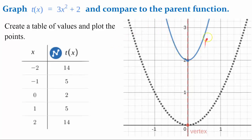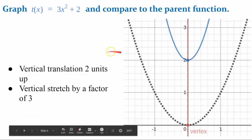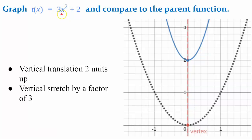The blue is function t. Its vertex is (0, 2), and here is the parent function for comparison. This is a vertical translation up 2 units from the parent function, and it is also a vertical stretch by a factor of 3.